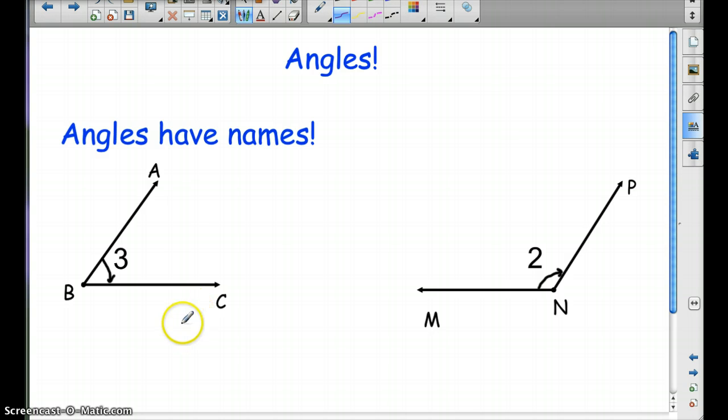So let's talk about angles. Angles have names. For example, this angle will be angle ABC. Or we could call it angle 3. This angle would be MNP or angle 2. Sometimes we'll label them with numbers. Sometimes it will be with three letters. And you have to follow those letters to find out what angle we're actually measuring. So here we're measuring A to B to C. And this one we're measuring or naming M to N to P. Pause the video and write this down if you need to.